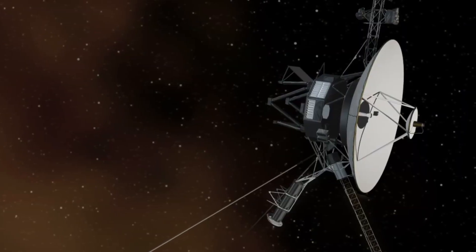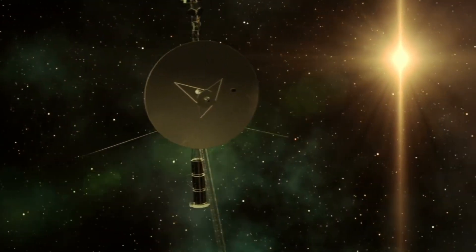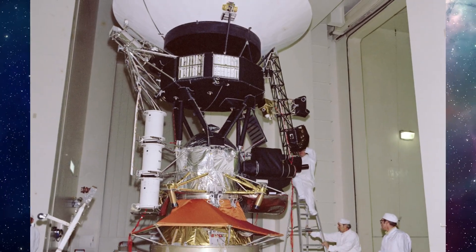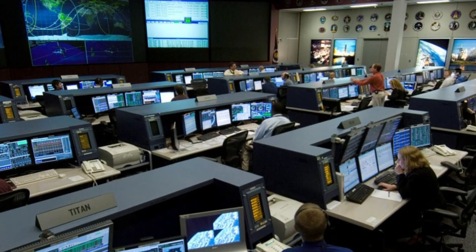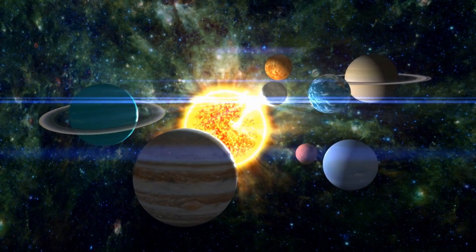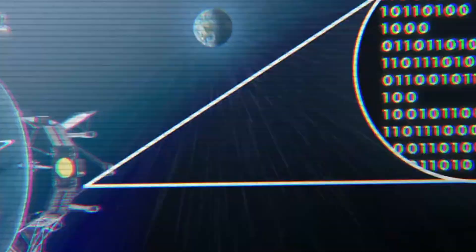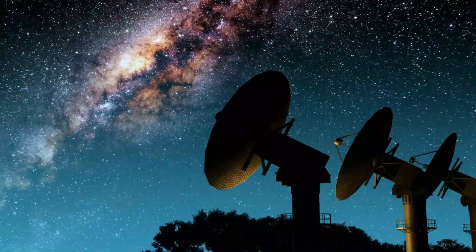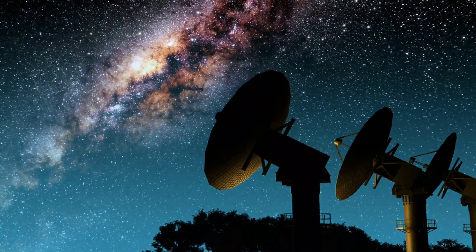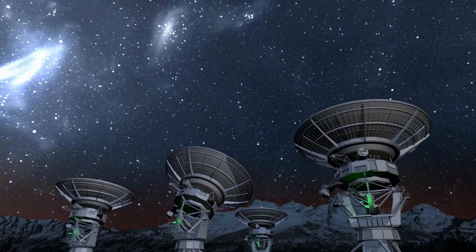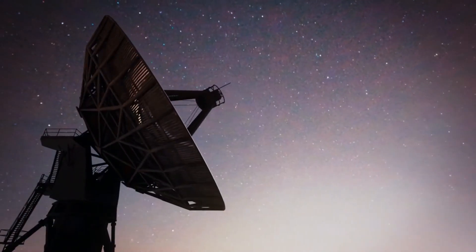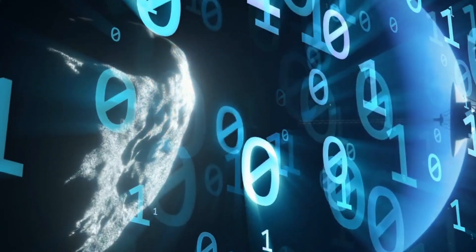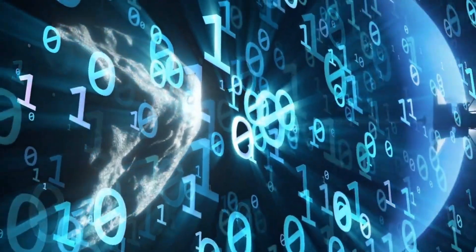Voyager 1's recent software update from 15 billion miles away showcases the remarkable capabilities of NASA's engineering and communication systems. Operating on the outer edges of our solar system, Voyager 1 relies on NASA's Deep Space Network, a trio of massive radio antennas strategically positioned around the globe. These antennas work in unison to maintain contact with spacecraft like Voyager, sending and receiving signals across vast distances of space.